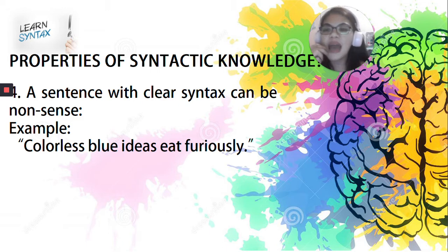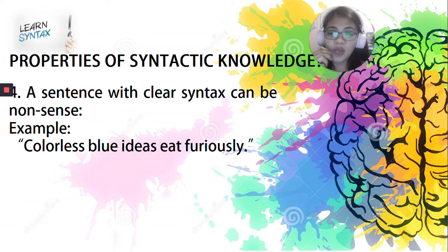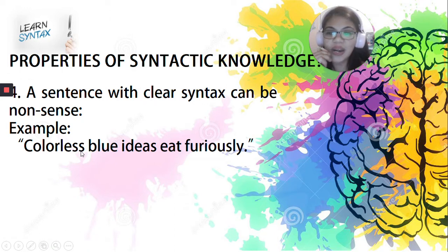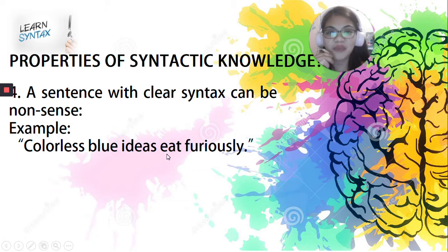Number four: a sentence with a clear syntax can be nonsense. For example, looking at it, it's totally nonsense — however, syntactically speaking, it is correct. You can see here a subject, which is 'colorless blue ideas,' and the verb in the sentence 'furiously.' So you can see a noun phrase and at the same time a verb phrase, thus forming a simple sentence that is syntactically correct but semantically meaningless.